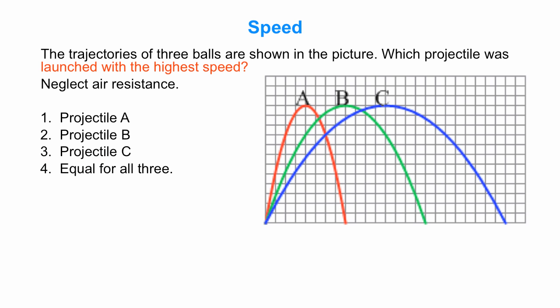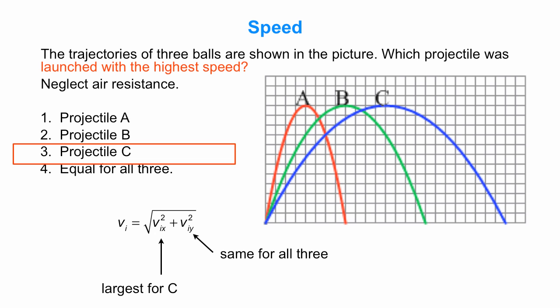What about speed? Which one was launched with the highest speed? Well, we can say the initial speed is the square root of VIX squared plus Viy squared. We've just realized that Viy is the same for all three. But the X component of the initial velocity of C must be larger than for the other two, because C went further horizontally. So VI is bigger for projectile C.